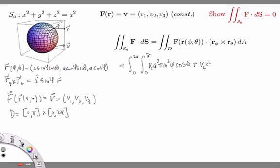and then the last term is v3 times a cubed and then sine phi cosine phi, d phi d theta.